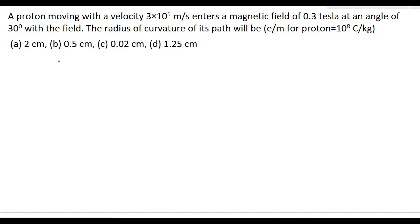Now here, the velocity of the proton V is equal to 3 into 10 to the power 5 meter per second. The magnetic field B is equal to 0.3 tesla, the angle theta is 30 degrees, and e by m equals 10 to the power 8 coulomb per kg.